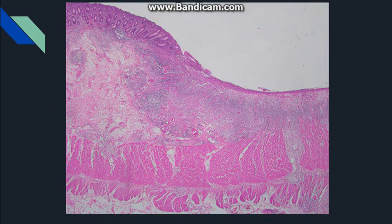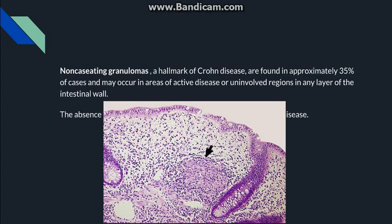In the histological image, the abrupt transition between ulcerated and normal mucosa can be seen — the lining epithelium is present up to a point, then there is an ulceration. Non-caseating granuloma, though not present in all cases, is very characteristic of Crohn's disease.